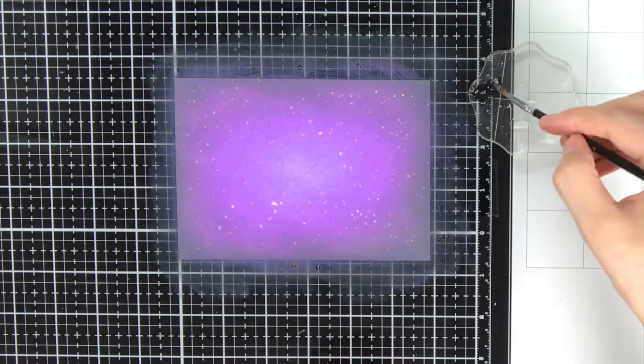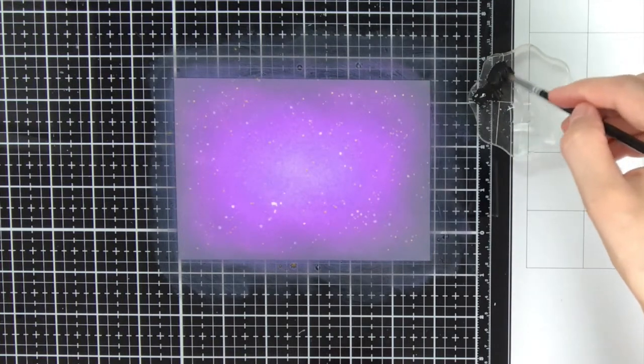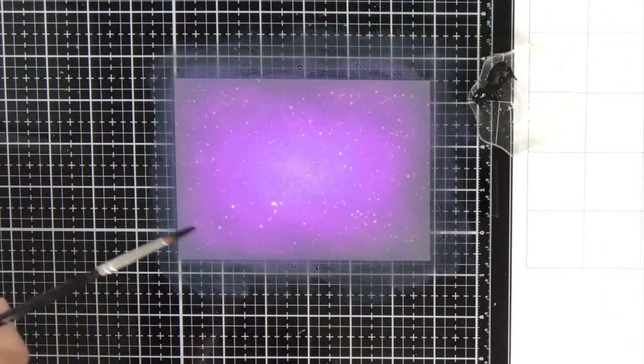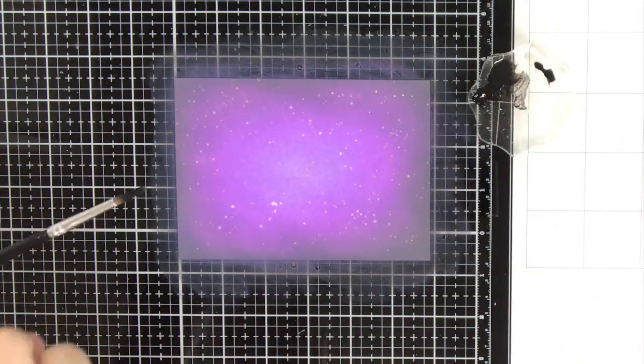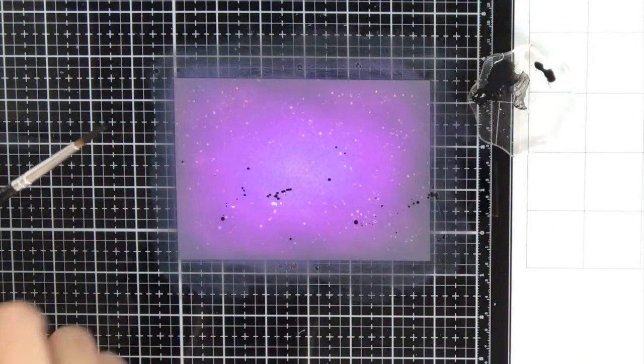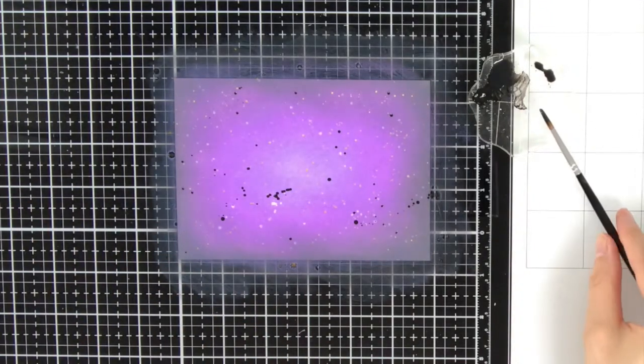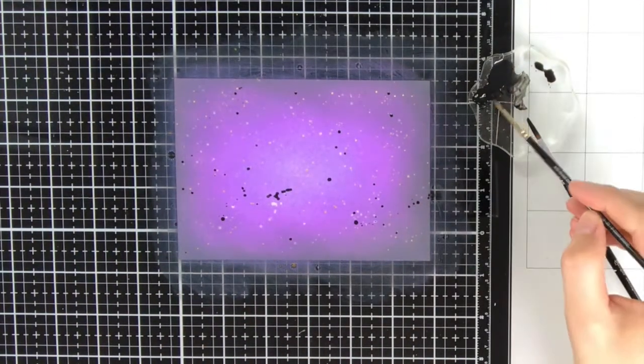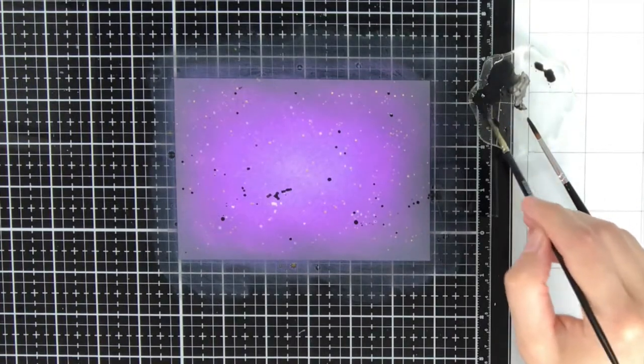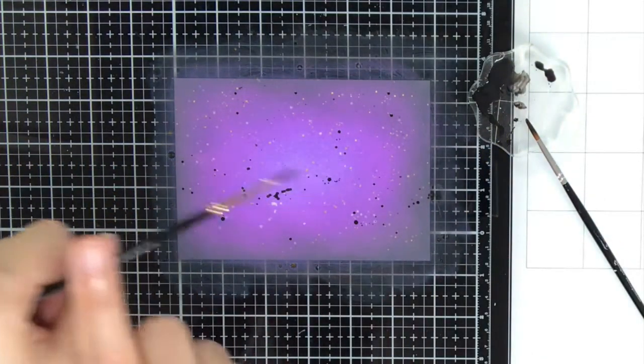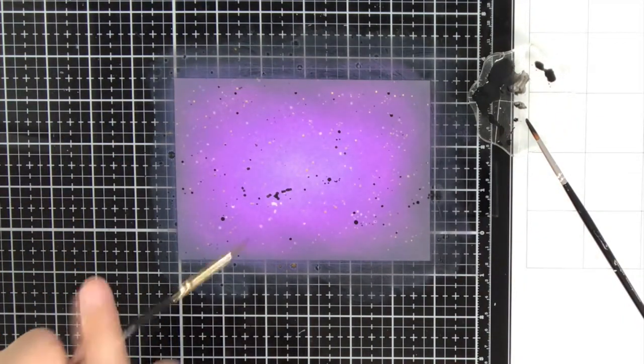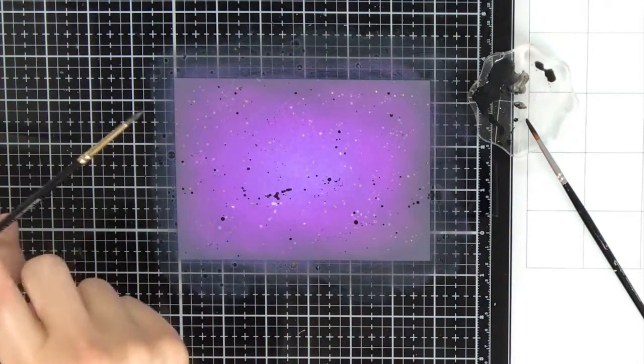To create more contrast with the lighter splatters, I also wanted to add some black splatters. I'm doing this by diluting some black acrylic paint with water. But as you can see I put down a little bit too much water with the acrylic paint and I got these big blobs, but it will be ok in the end. That is why I'm switching to a smaller paintbrush to get some smaller splatters on the page.